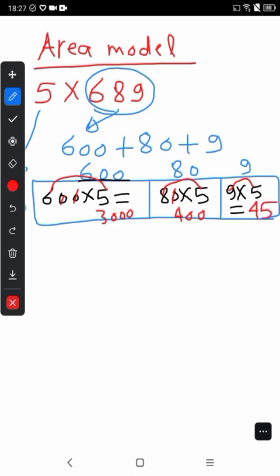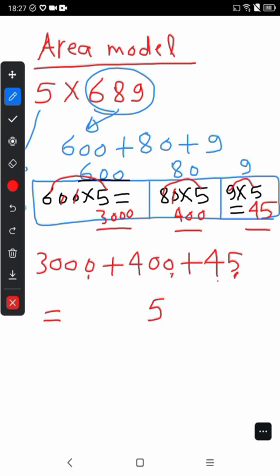Last step, we will add 3 numbers. We have 3000 plus 400 plus 45. First, we add ones with ones: 5, 0, 0 equals 5. Next tens: 4, 0, 0 equals 4. And hundreds: 0, 4, 0 equals 4. Finally thousands: 3. The answer is 3445.